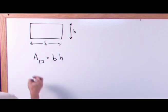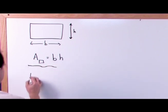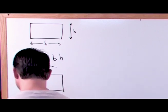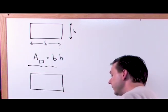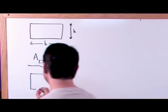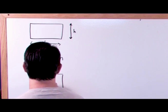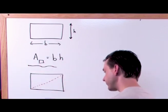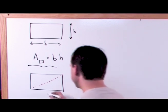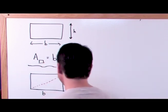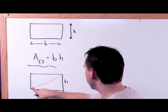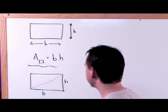Now let's draw this rectangle one more time. We're going to draw this rectangle again and split it up — we're going to draw a diagonal right here. You know that this is the base and this is the height. Now look what we've done: we've formed two triangles just by drawing a diagonal.